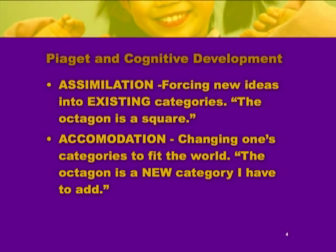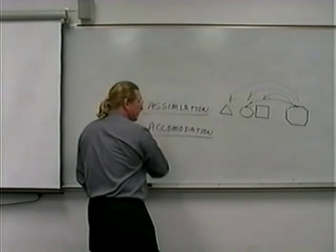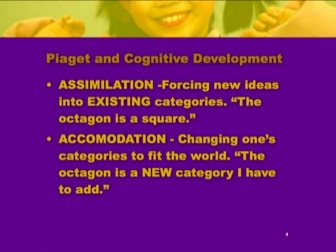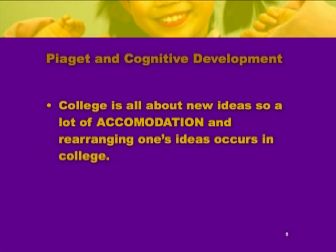We do this until the day we die because the world is so complex we can't come up with an original thought for every new variation. It's not a bad process — it's a good process, though sometimes it can be used in bad ways. Accommodation would be if you had triangle, circle, square, and you encountered the octagon — the stop sign. Accommodation would be: I've got to add this to my world because it's not like the square, the circle, or the triangle. It's a new category. When we accommodate, we expand. Going to college, one of the big things we're trying to do is accommodate — to look at the complexity of things we often thought were simple, question our basic ideas, and try to come up with new categories that explain the world in better ways.